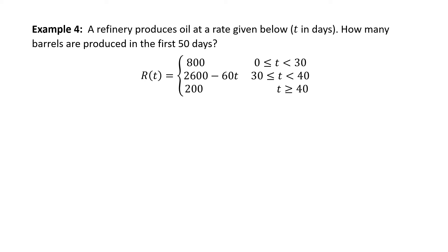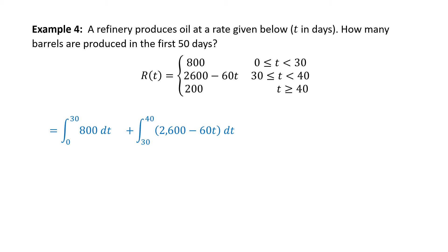The first integral is from 0 to 30 of 800T. For the next interval, from 30 to 40 days, the integral is from 30 to 40 of the middle piece, 2,600 minus 60T dt. The third piece is from 40 to 50 — even though the piecewise function says greater than 40 indefinitely, we're asked for the first 50 days — so the integral from 40 to 50 of 200 dt.